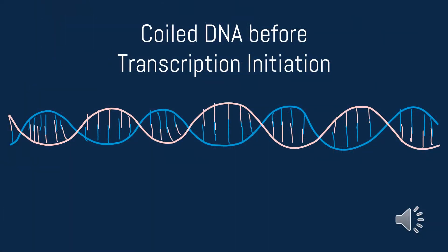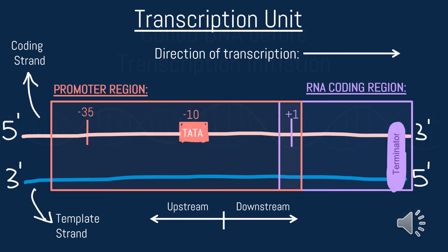Here we have an example of how DNA looks in its coiled state before initiation occurs and unwinds it. Keep this in mind as we continue. This diagram is of the transcription unit of DNA and its parts. Below are two parts of one DNA strand — pink and blue — that move in inverse directions to each other. We can see this by the pink strand being labeled in the five to three prime direction and the blue strand vice versa.